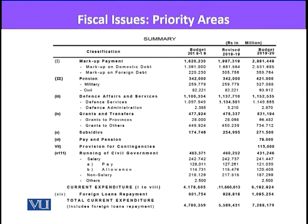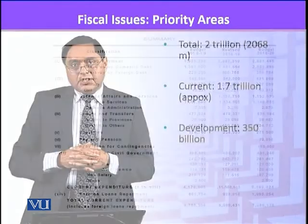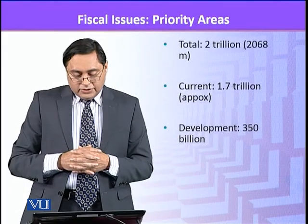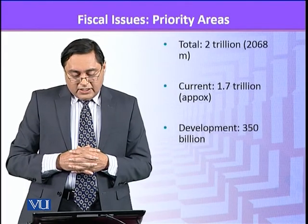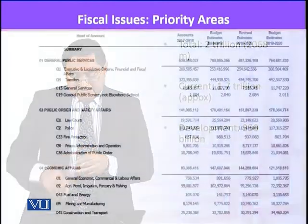Now we look at the Punjab figures. If you look at the total expenditure, it's around 2 trillion rupees — 1.7 trillion is on current expenditure and around 350 billion is on the development sector.